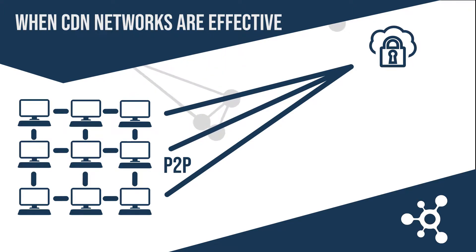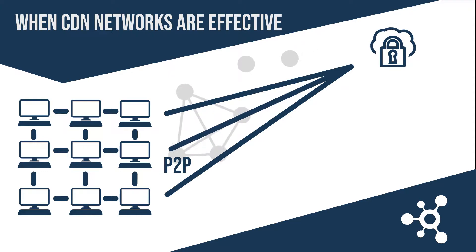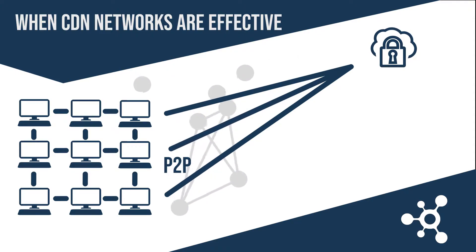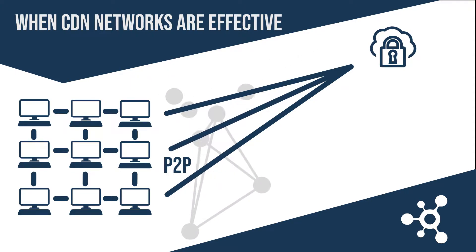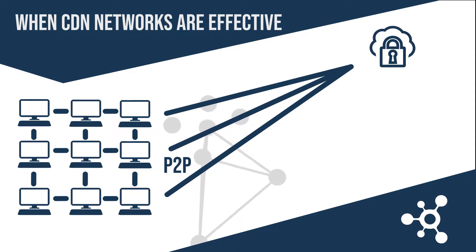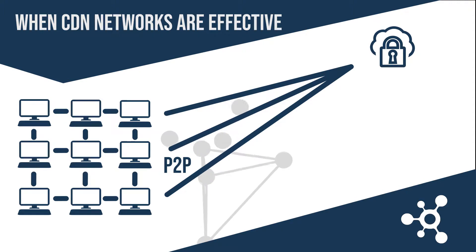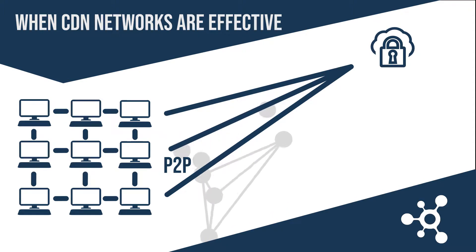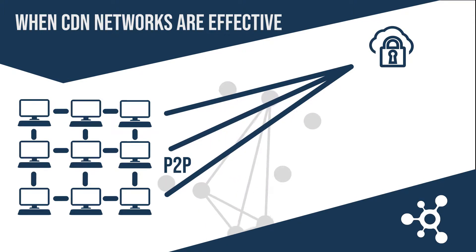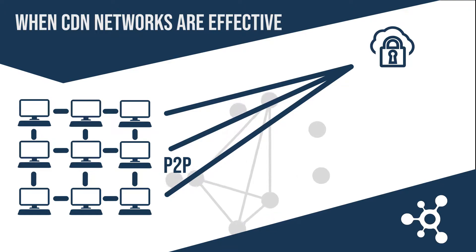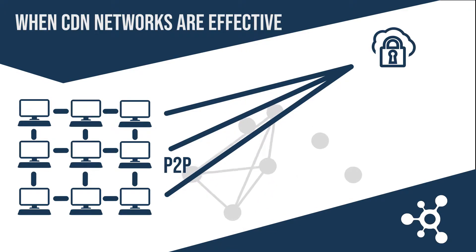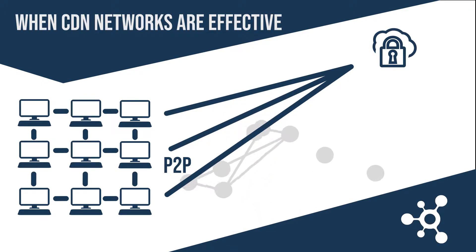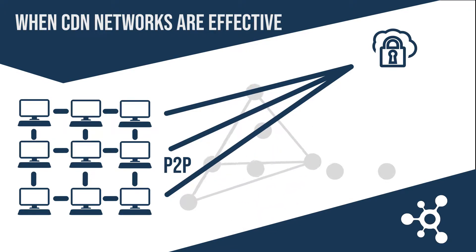One node updates two other nodes, two nodes update four other nodes, four nodes update eight nodes, and so on. Earlier in this talk, we mentioned content delivery networks, also called CDNs.